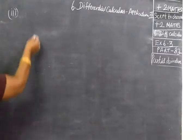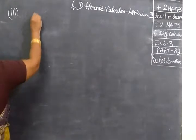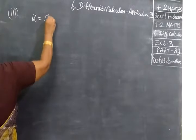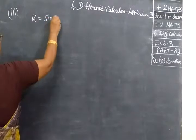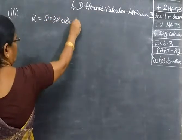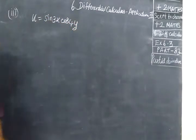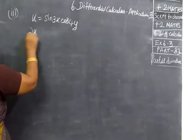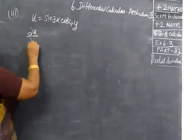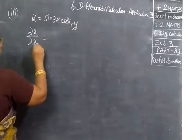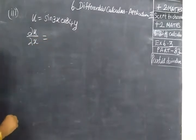Next we are going to find u equal to sin(3s)cos(4y). First we have to find ∂u/∂s, which is differentiating with respect to s.